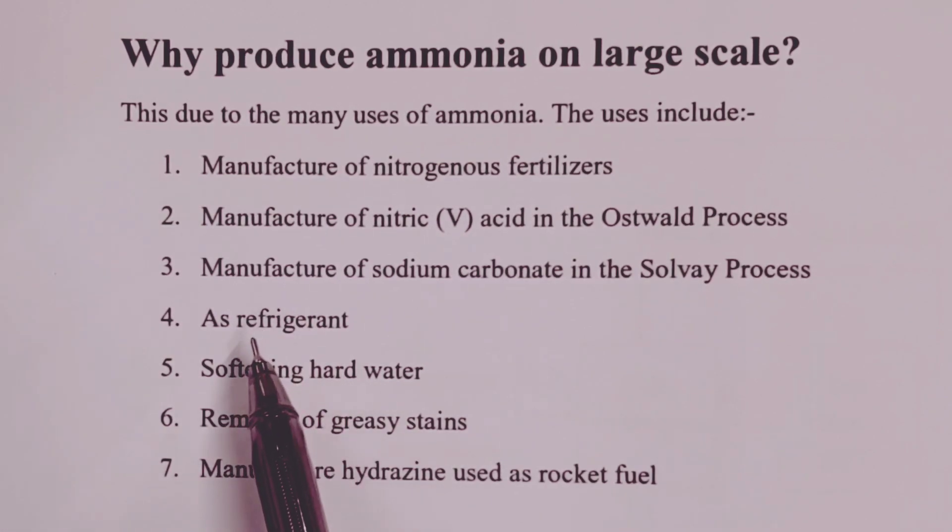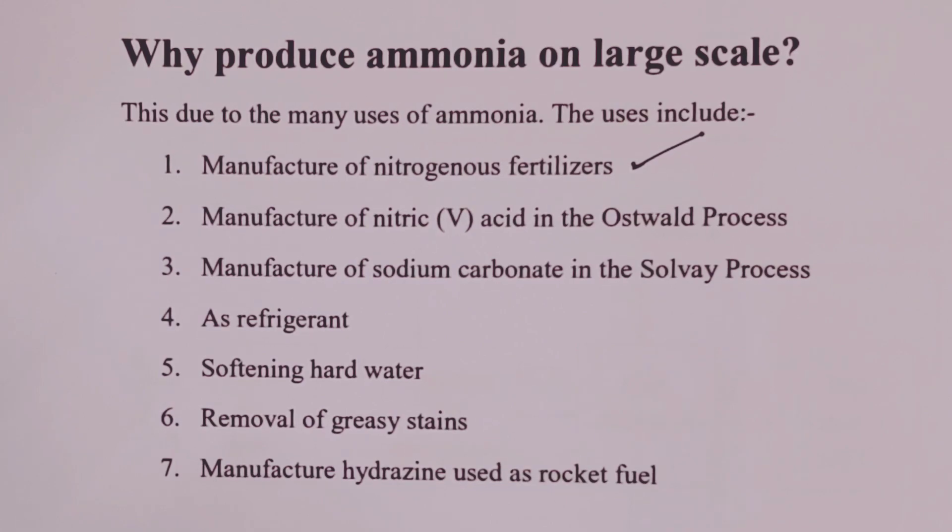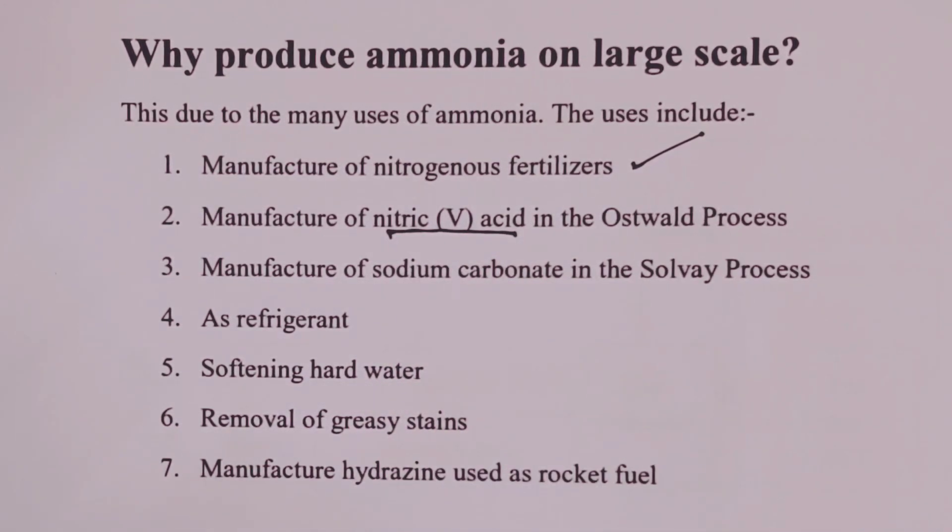Ammonia is put to quite a number of uses. We have been able to list down seven of those uses. So ammonia is majorly used in the manufacture of nitrogenous fertilizers. We also use ammonia in Ostwald process to manufacture nitric acid. Of course we also use ammonia in the manufacture of nitrogenous fertilizers. We also use ammonia to remove stains that have got grease.